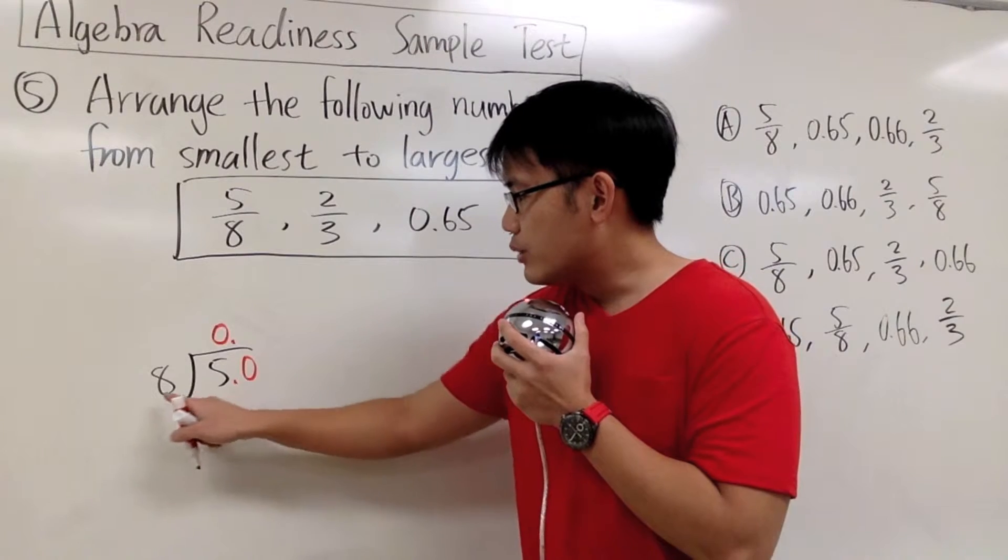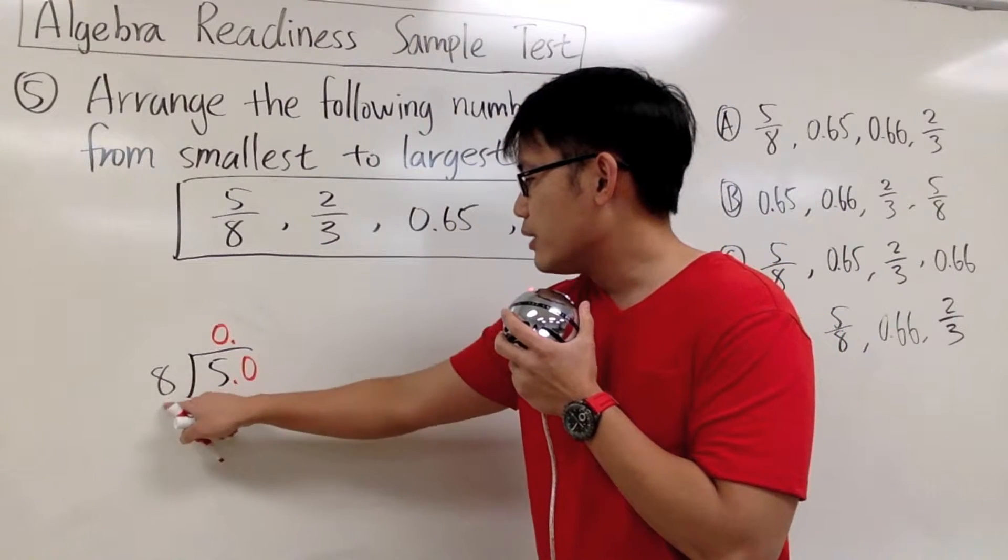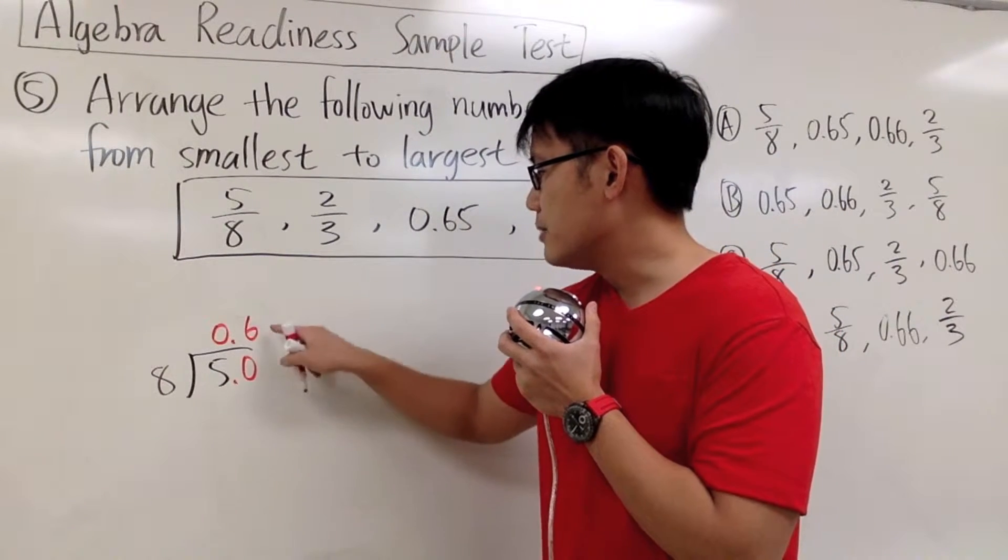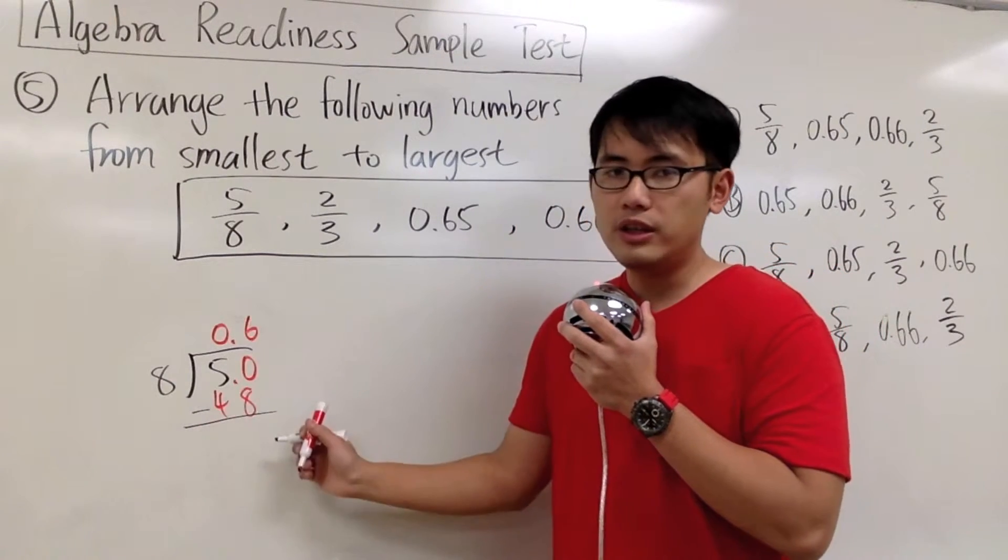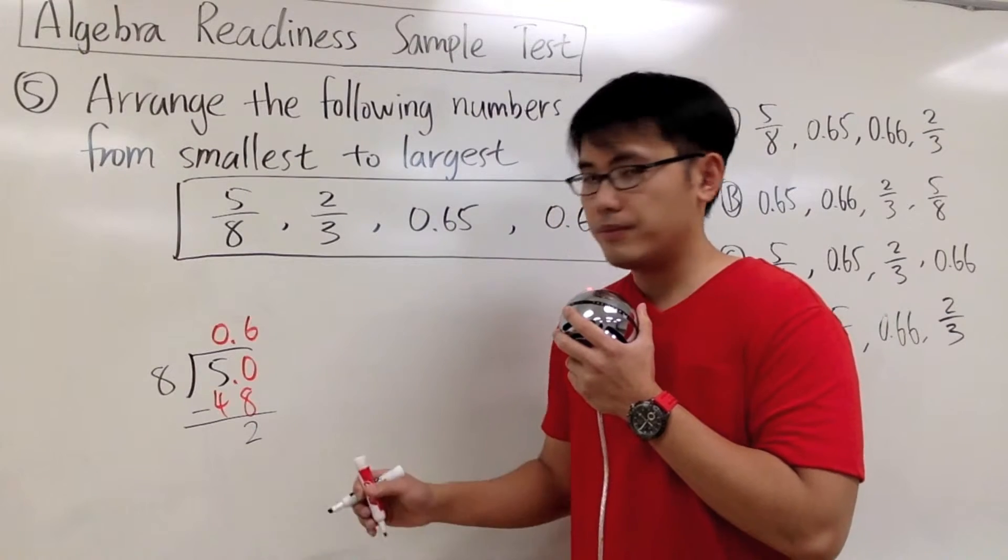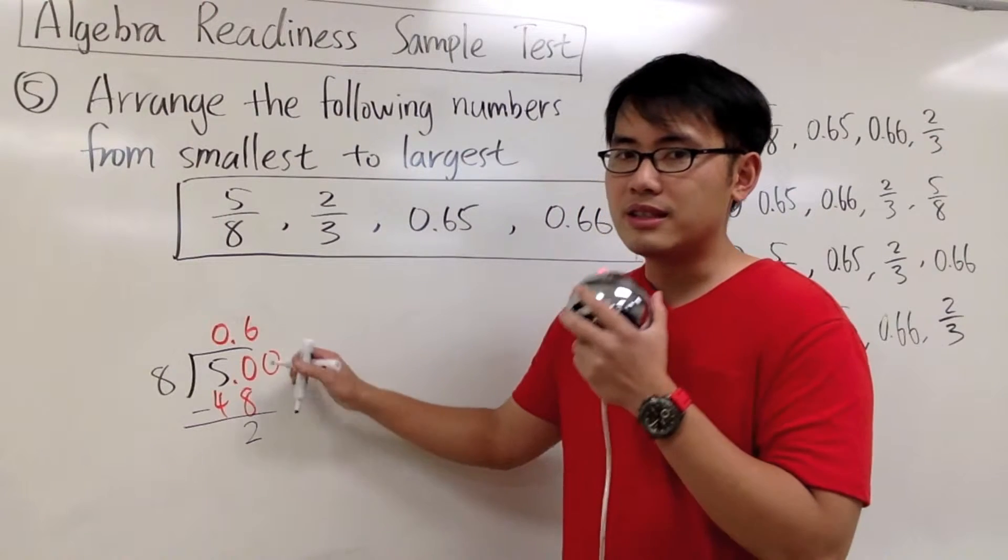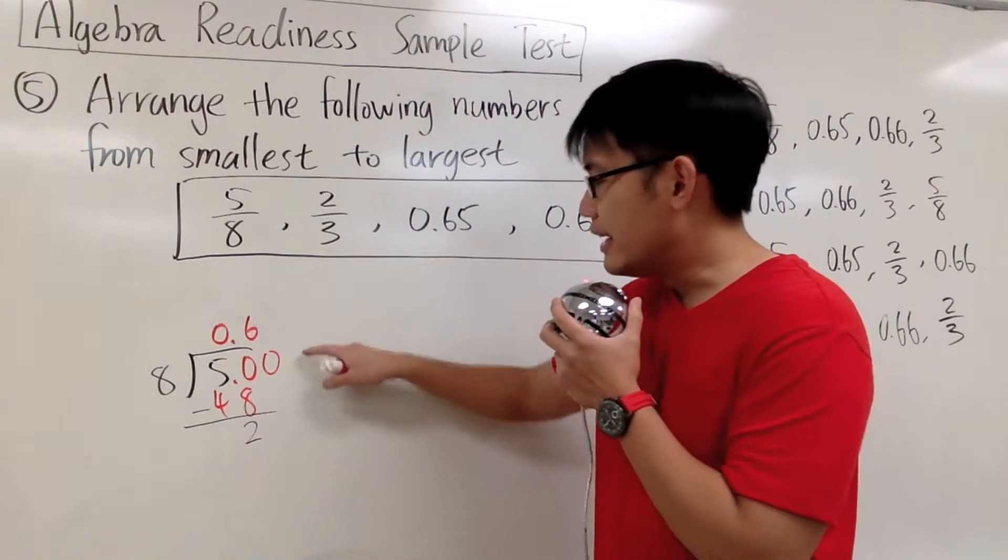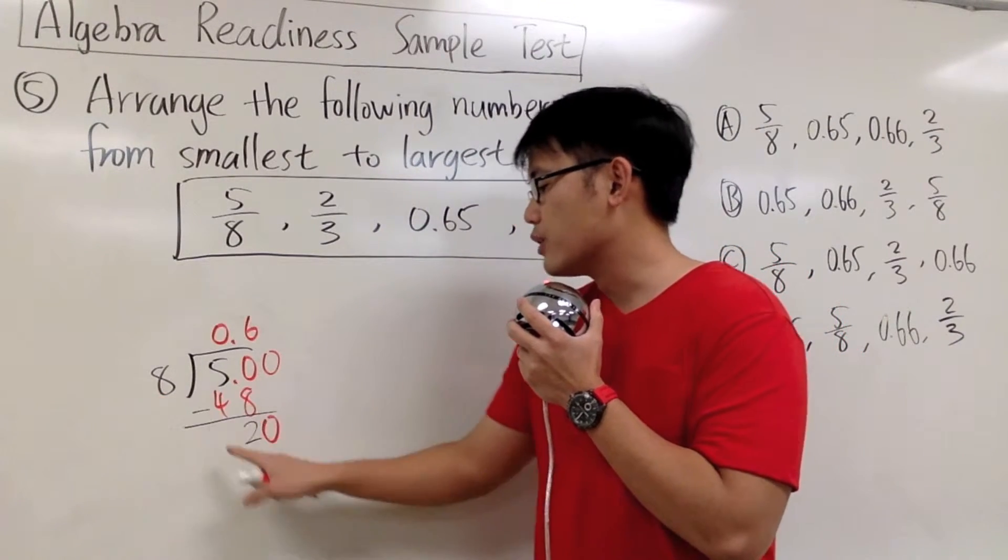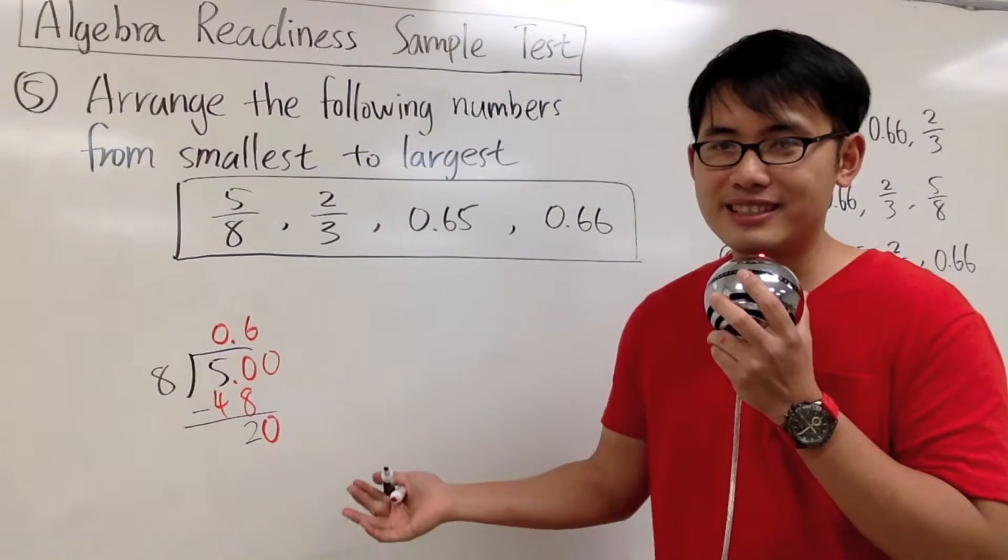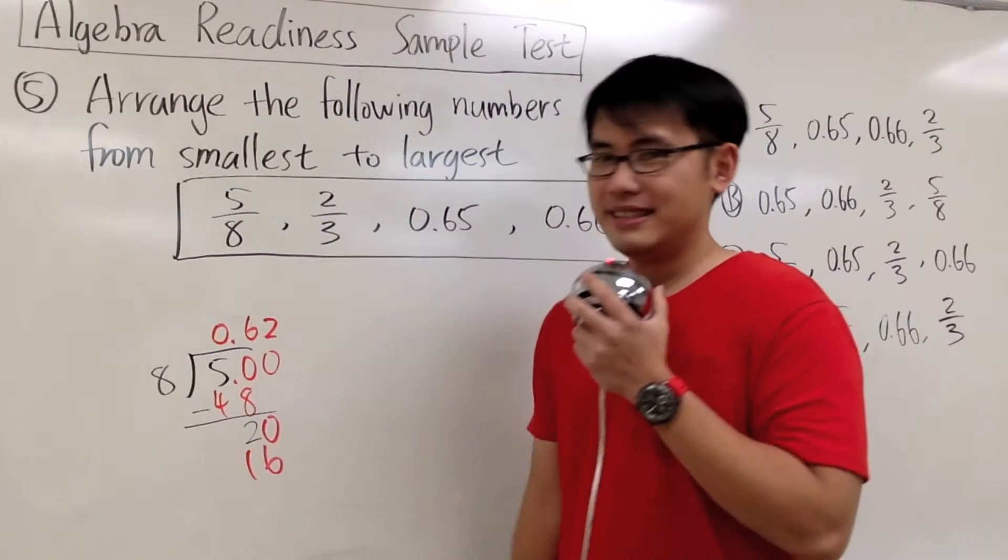Once I do that, I can look at the question as, 8 goes into 50, how many times? Well, I know that 8 goes into 50 6 times because 6 times 8 will be 48. And then after we subtract, 50 minus 48, that will give us 2. And we can continue from there by attaching another 0, 5.00. It's the same as 5. And then we can bring down this 0 down here.